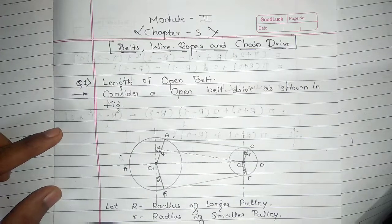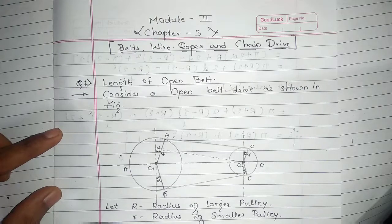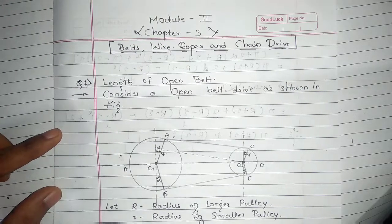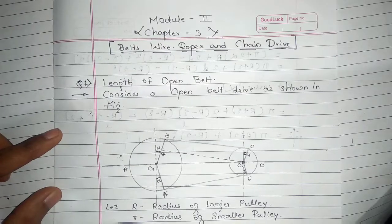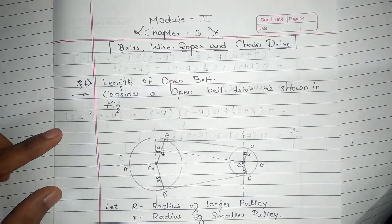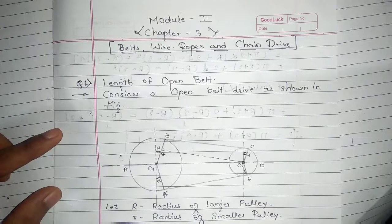Hey guys, this is Salman and welcome back to the channel Mechtime. Today I am going to start with Module 2, Chapter 3, that is Belts, Wire, Ropes and Chain Drives. In the last videos I completed the 1st module, 1st chapter and solved different types of problems. Please go to my channel and check the problems and follow the procedures. Today we are going to see the theory questions from Chapter 3.